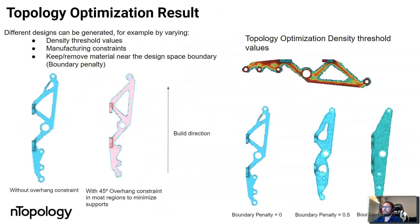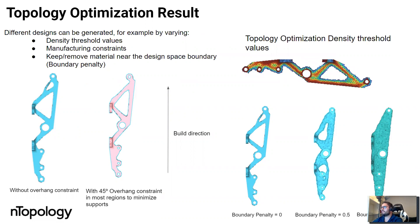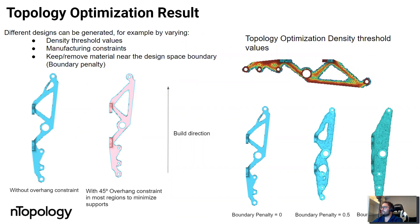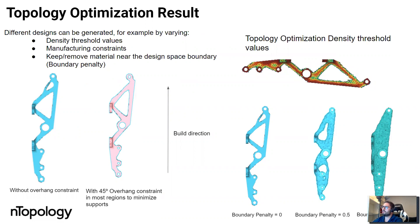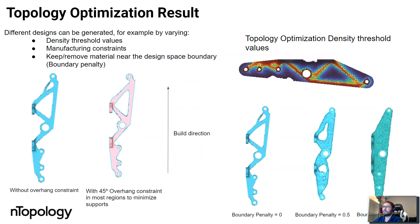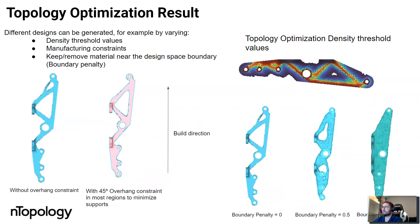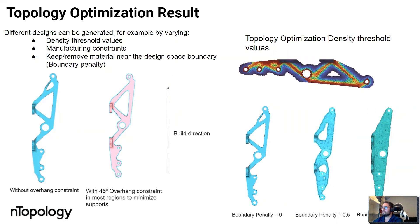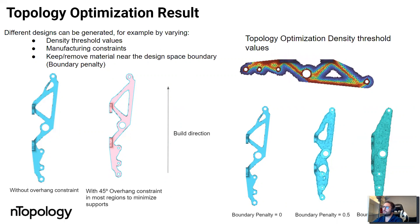When we launch a topology optimization, we don't only get one result — we get many results, depending on how much material we actually want to keep. We have access to all of the information about which elements have increasing importance for the load transfer. Depending on other parameters such as manufacturing constraints or boundary penalty — meaning how much material we want to remove or keep near the design space boundary — we can generate different design alternatives and the user can select which one is most convenient.